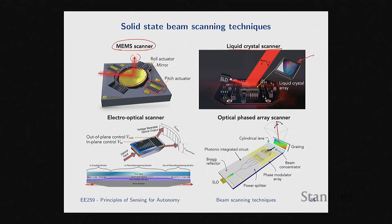MEMS limitations today include mirror size — MEMS devices are very small, so accommodating a 4–5 mm beam on one mirror is challenging. You can make mirror arrays, but synchronizing them is difficult. There are also mechanical reliability issues for automotive robotic applications. Electro-optical scanners use two electrodes controlling in-plane and out-of-plane angles (azimuth and elevation). By applying voltages, they modulate the refractive index of the medium to deflect the beam.